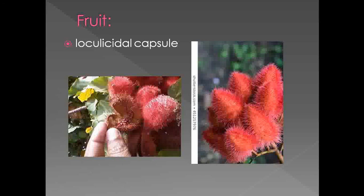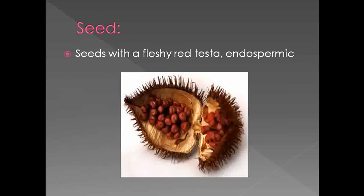The type of fruit observed under this family: these are the Bixa fruits, called a unilocular capsule. If you observe, the seeds show presence of hairs. The seeds are also red in color. Whenever the fruit dries, you are able to see the seeds which are red in color.